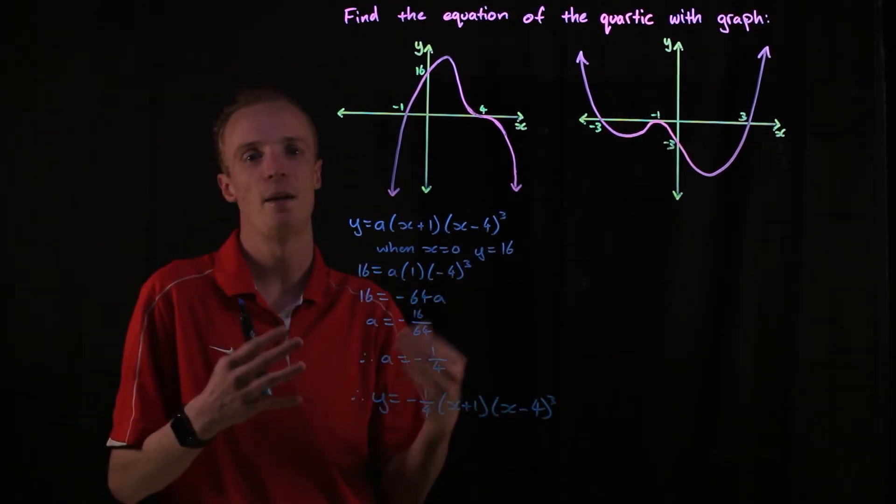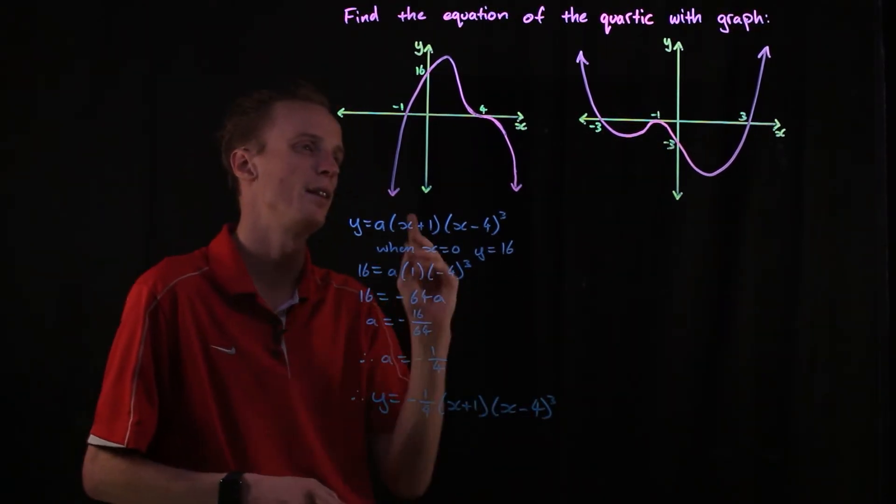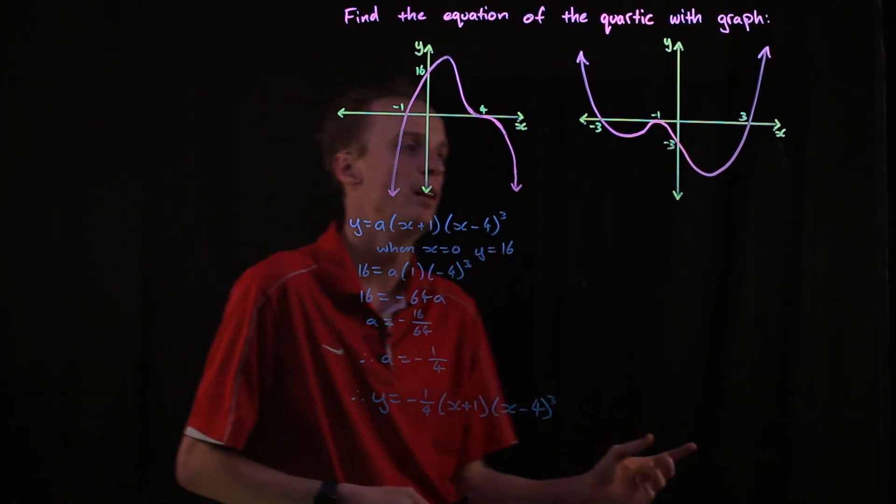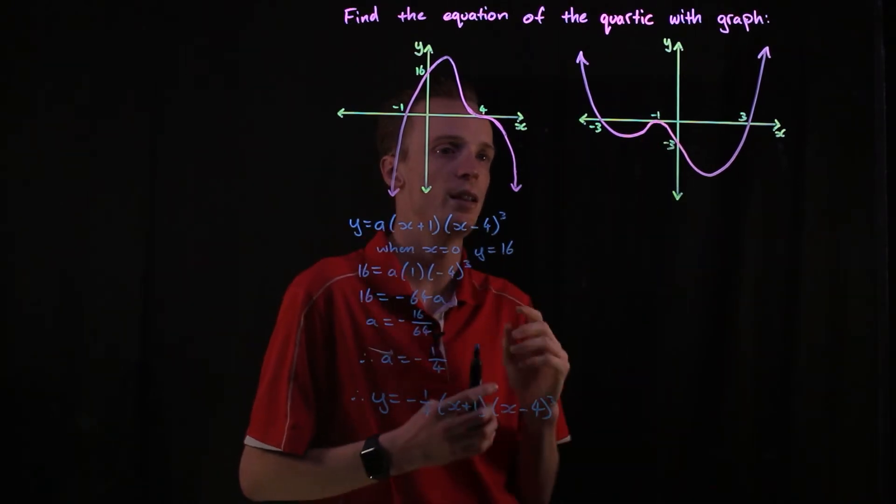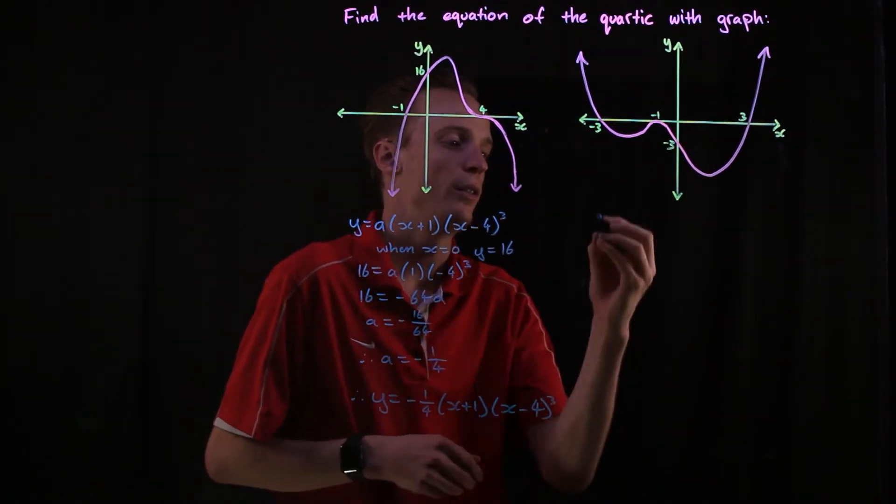For the next graph I've got here, you really follow the same sort of steps. The very first step is to identify the types of roots that you've got. I know that's going to cut here and cut here, so they're just going to be linear factors. It touches here, so that's going to be a repeated root.